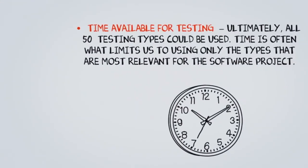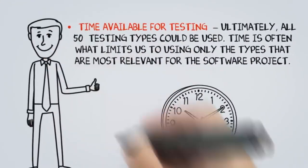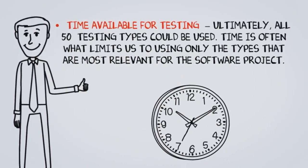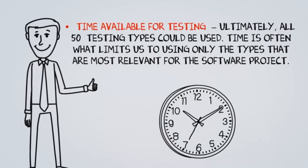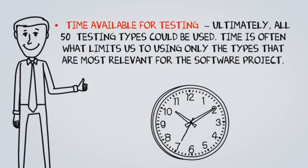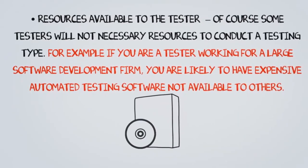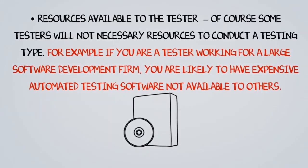Another variable is the time available for testing. Ultimately all 50 testing types could be used, but time often limits us to only the types most relevant for the software project. Resources available to the tester also matter — some testers will not have the necessary resources to conduct a testing type. For example, a tester working for a large software development firm is likely to have expensive automated testing software not available to others.